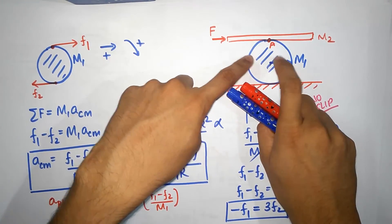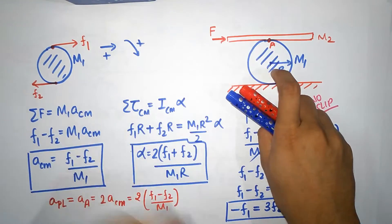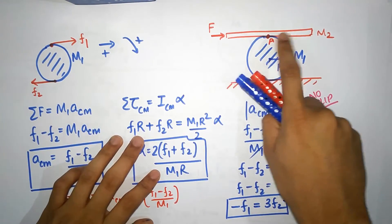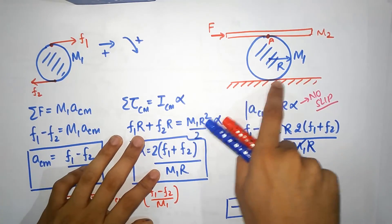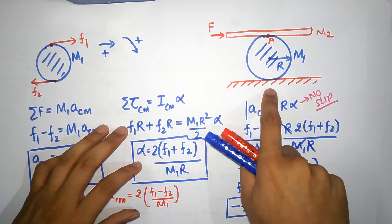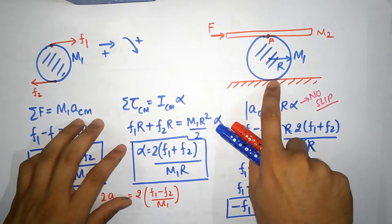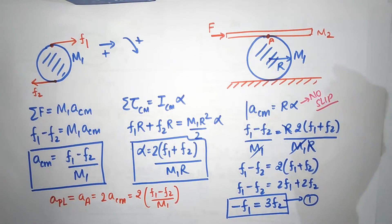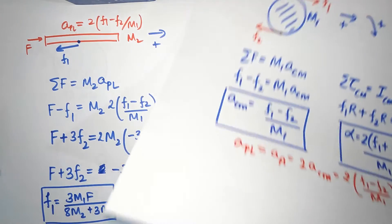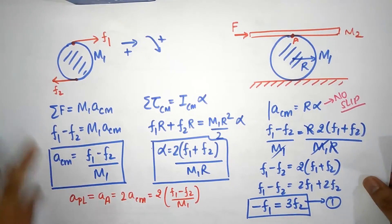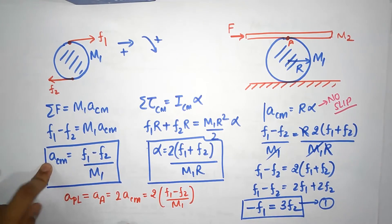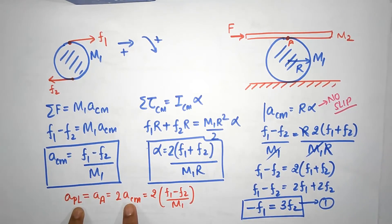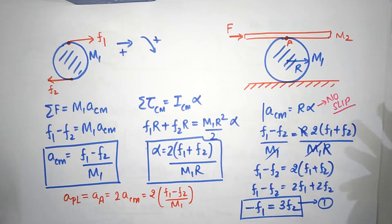Physically: the plank's friction drives the cylinder forward, causing it to roll and push backward on the ground — so the ground friction acts forward. With f1 and f2 known, you can directly substitute into a_cm = (f1 - f2)/m1 and a_plank = 2*a_cm to get the final answers. The problem is now fully solved — see you next time.